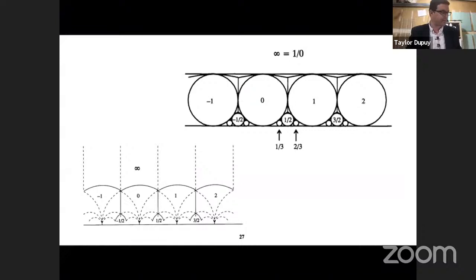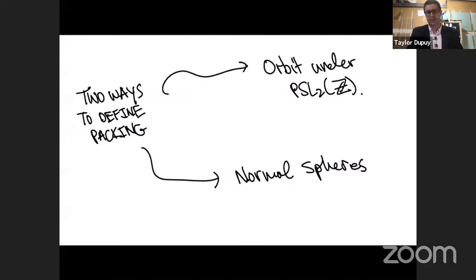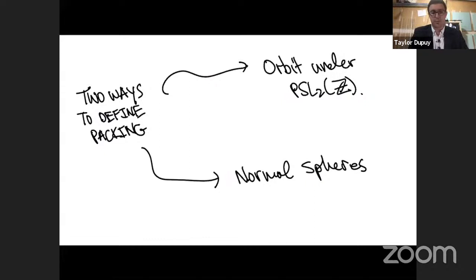There are two ways of defining this configuration of circles. I could give a direct definition of what the set of circles is, or describe it indirectly as an orbit of one circle under all these Möbius transformations — just act on one particular circle and get them all. Both approaches are useful. In the higher dimensional case things get more complicated, and they're not obviously equivalent. The reason I call these 'normal spheres' is that in higher dimensions the radii are defined in terms of norms of prime ideals or the reduced norm of Clifford algebras.